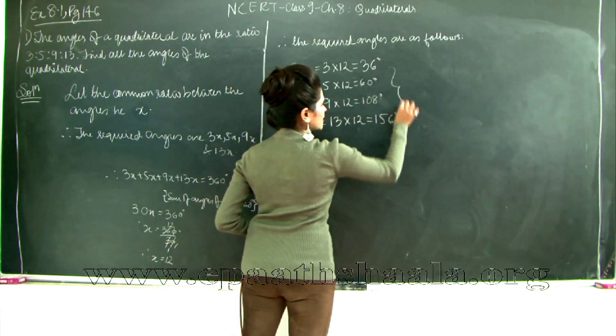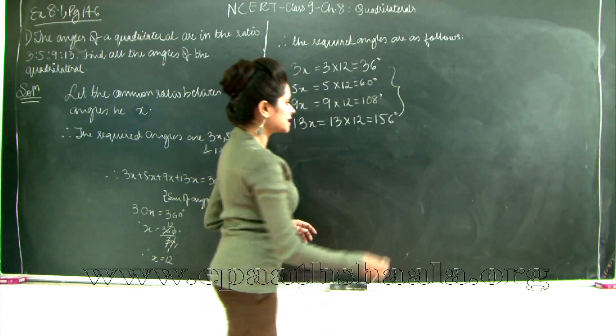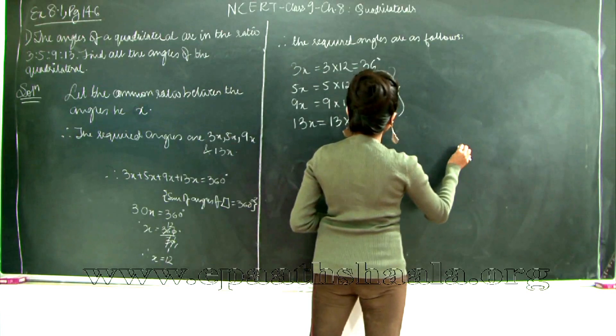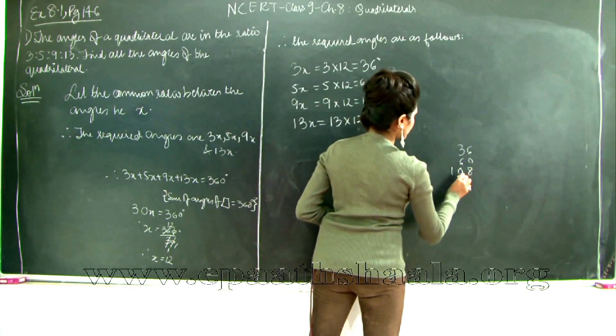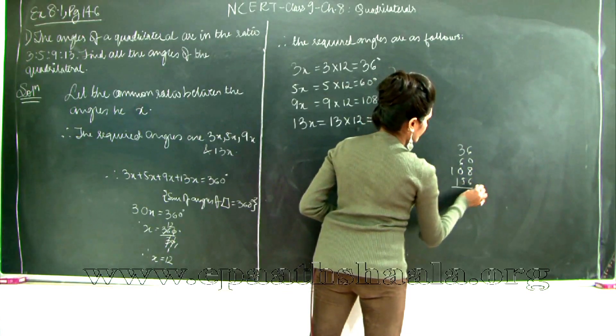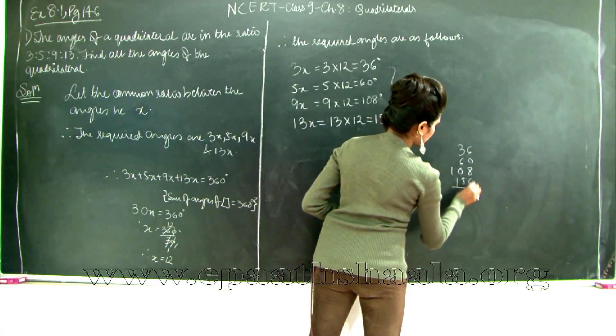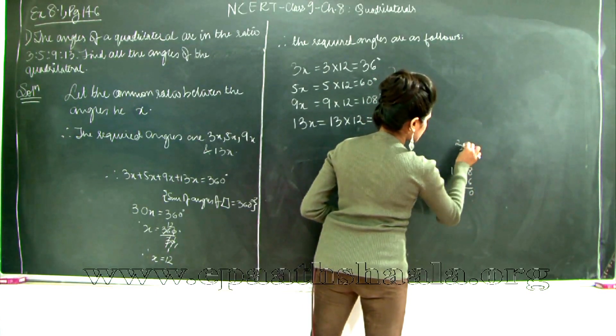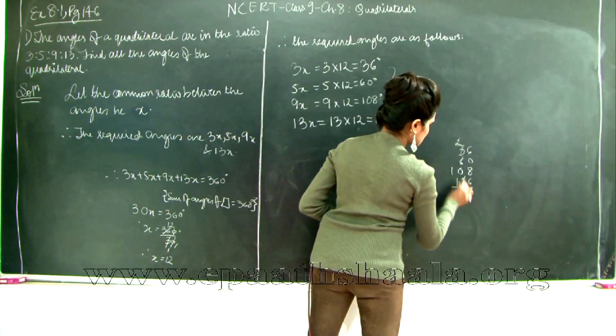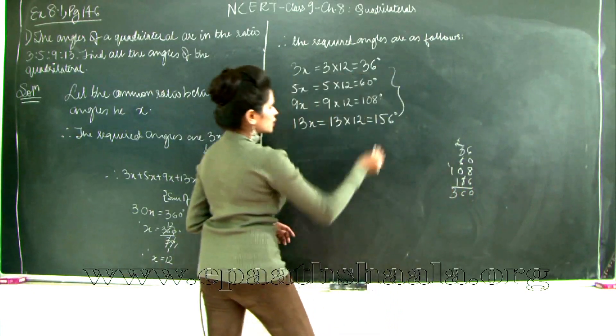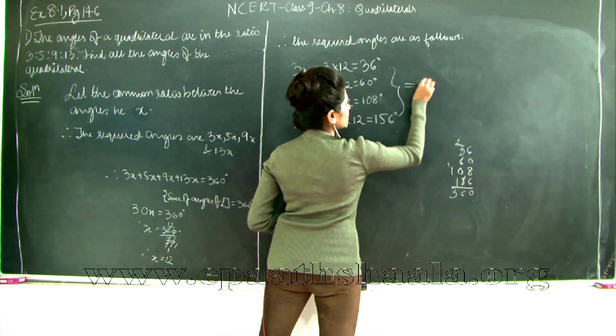Now let's add all of these and see whether we are getting 360 degrees, because the sum of angles of quadrilateral is 360 degrees. So I am going to add this. So I get this as 20. Then we are getting 6, 7, 8, 9, 10, 11, 11 plus 5 is 16, 360 degrees. So therefore adding all of these we are getting 360 degrees.